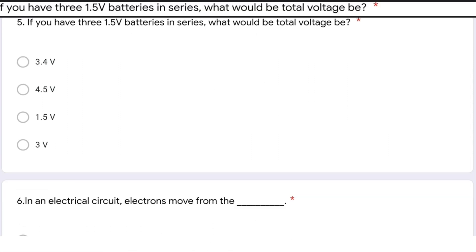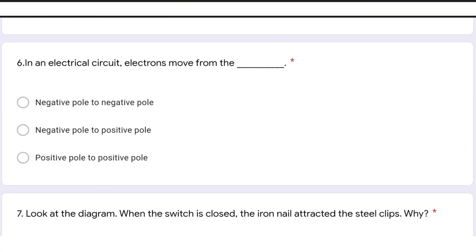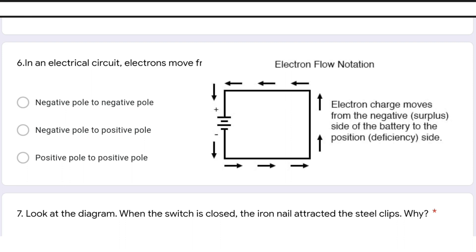In this question: in an electrical circuit, electrons move from — in an electrical circuit, the electron direction is from negative to positive, whereas as per the conventional current rule, current direction is from positive to negative.